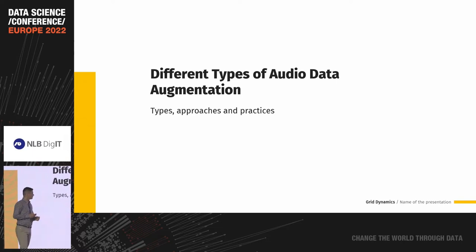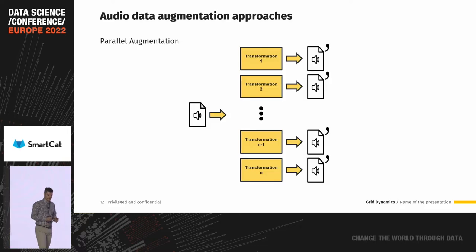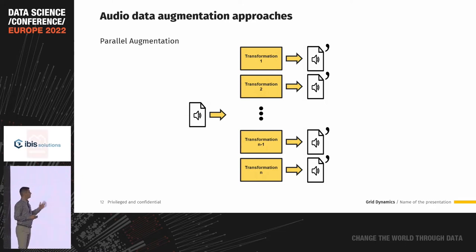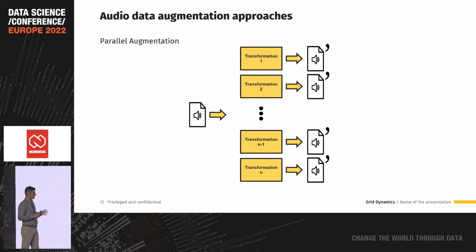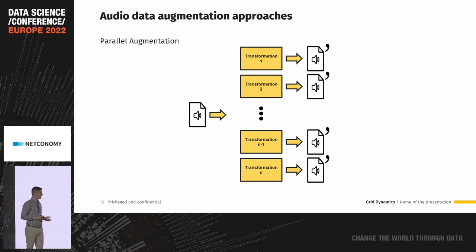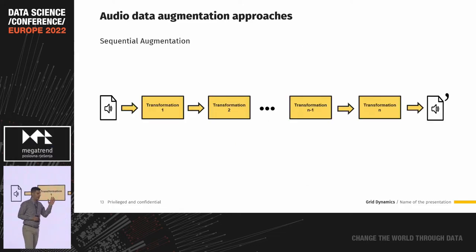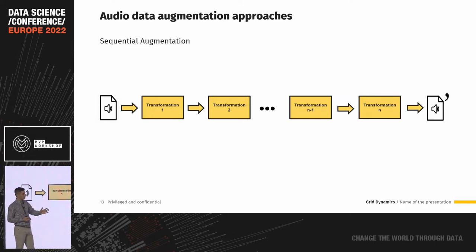Now I'll talk about different types, approaches, and practices. There is parallel augmentation and sequential augmentation. Parallel augmentation means a set of transformers run in parallel — by passing a single audio file, we get multiple augmented data versions. Sequential augmentation has one input passing through a chain of transformers to get one output at the end.